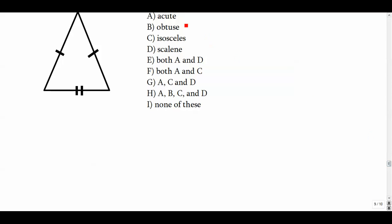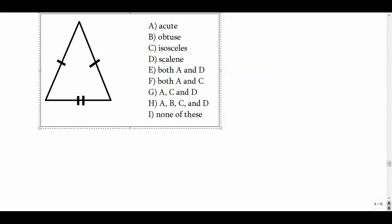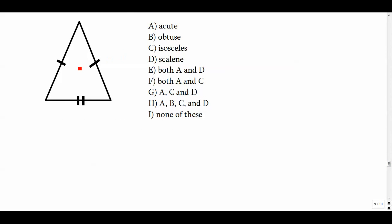This one is definitely isosceles — I see two sides that are the same, called our legs. The base is different. You can tell that because of the two tick marks. So I've got base angles that are congruent across from the legs. They all appear to be acute angles. Both A and C work, so if I were only putting one answer, I would put that.